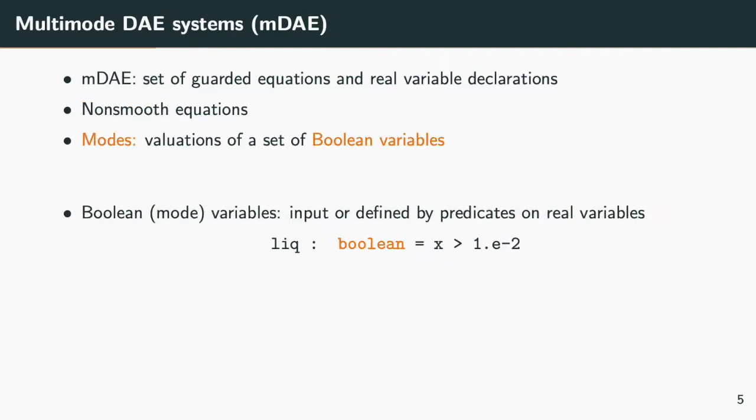Therefore, a multimode system contains a set of boolean variables, which values are defined either outside of the model or within the model by a predicate.